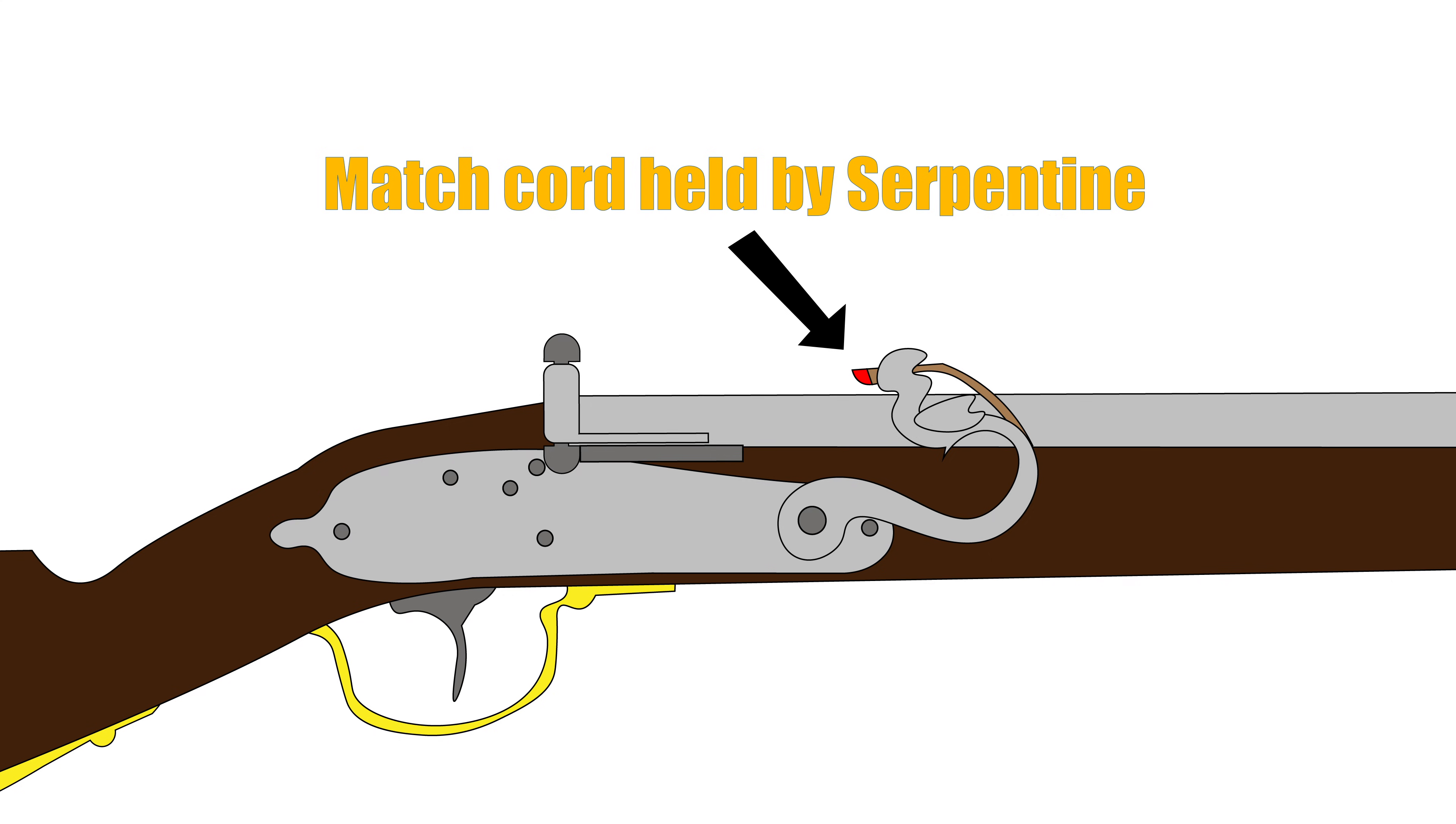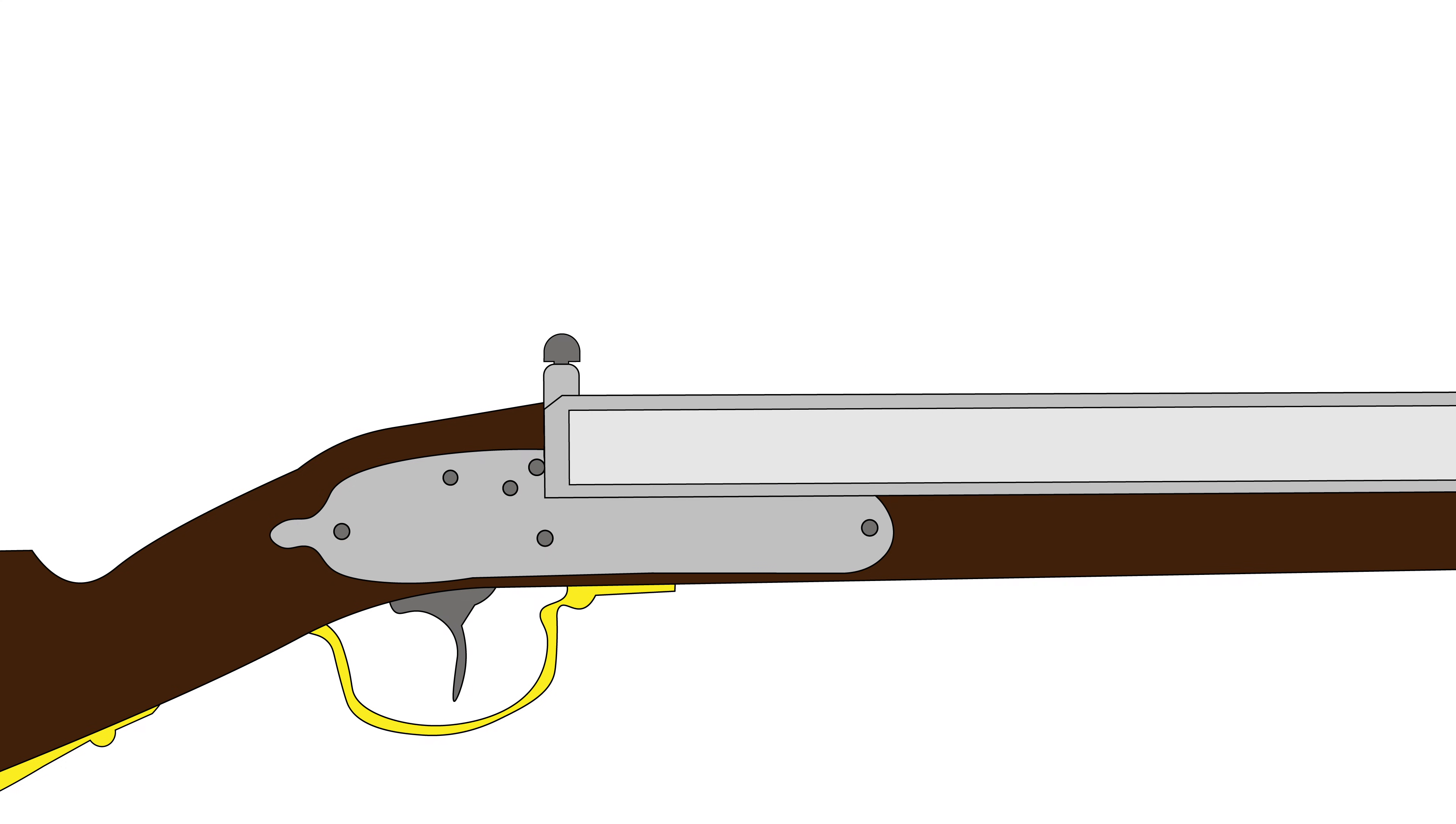Now let's look at the firing sequence together. Early matchlock guns were muzzleloading smoothbores. The shooter must first carefully measure the correct amount of gunpowder to be used for the main charge.